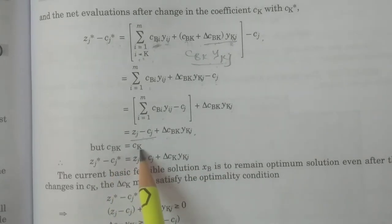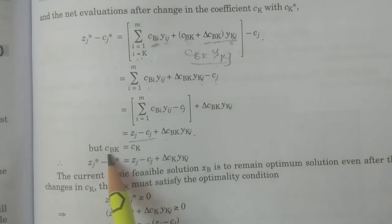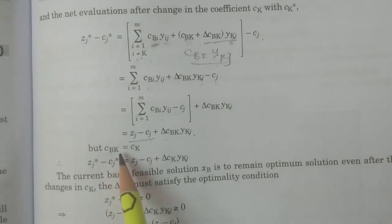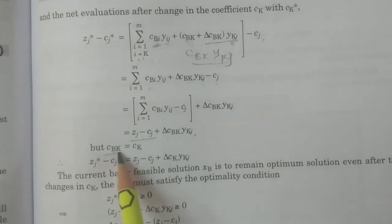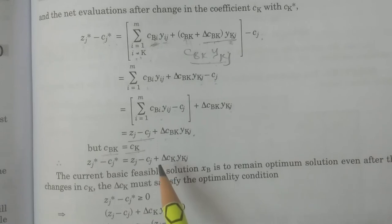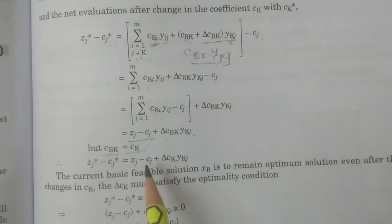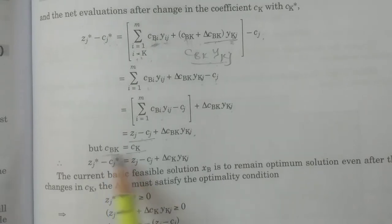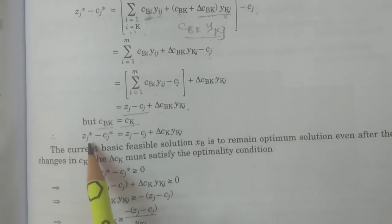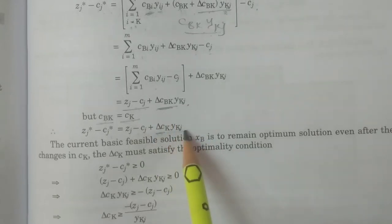Note that cBk is nothing but ck, because there are no two separate costs for basic and non-basic variables — the cost of variable xk is always ck. If it is in the basis, we write cBk, therefore cBk = ck. So zj* - cj* = (zj - cj) + delta ck * ykj. The current basic feasible solution xB remains the optimum solution even after the change in ck, provided delta ck satisfies the optimality condition.